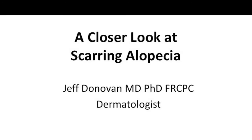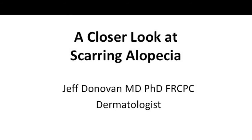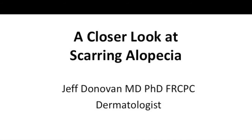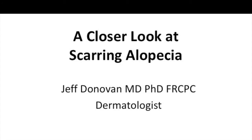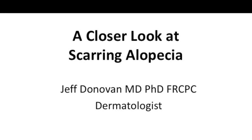My name is Dr. Jeff Donovan. I'm a dermatologist in Vancouver. It's my privilege to speak to you today about a rare group of conditions known as the scarring alopecias. These conditions go by names such as lichen planopilaris, frontal fibrosing alopecia, folliculitis decalvans, central centrifugal cicatricial alopecia — several conditions that form the group we refer to as scarring alopecias.